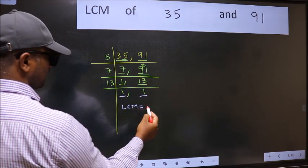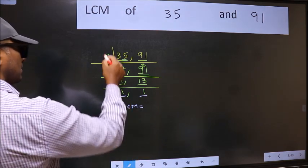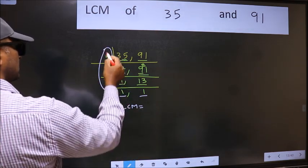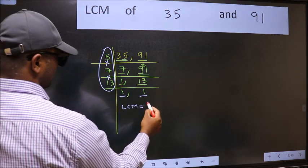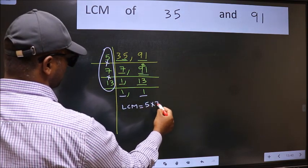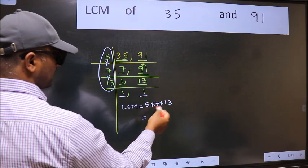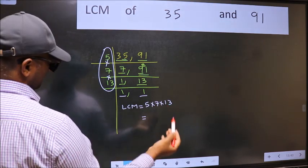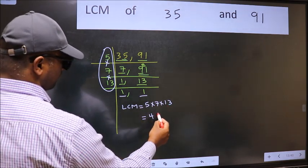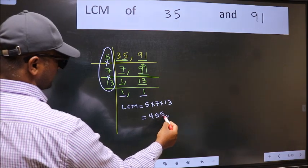So our LCM is the product of these numbers. That is 5 times 7 times 13. When we multiply these numbers, we get 455 as our LCM.